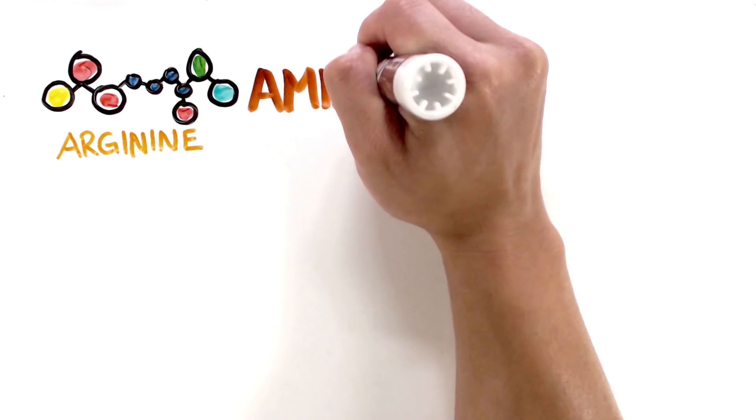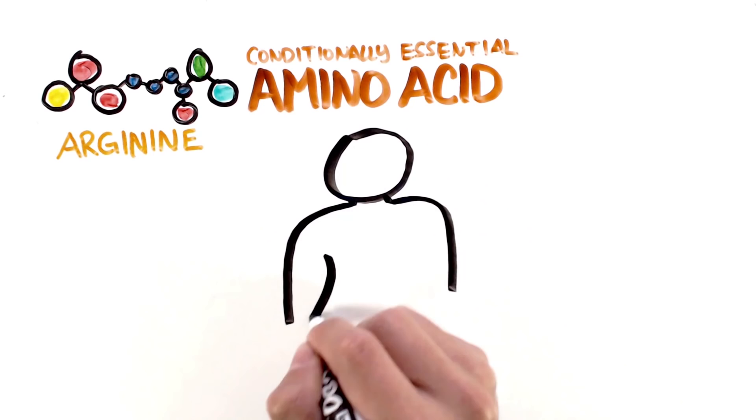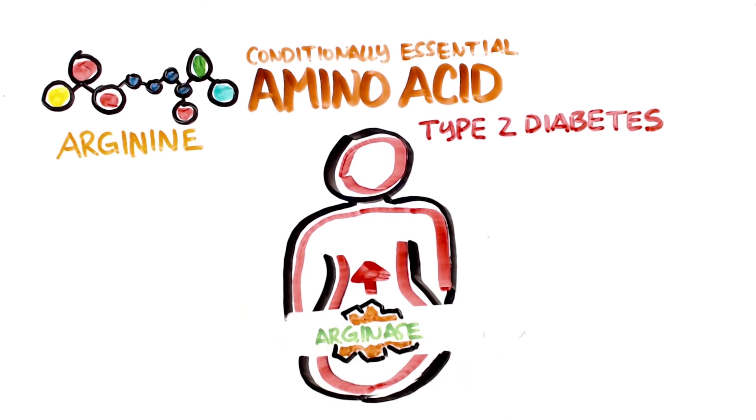A conditionally essential amino acid to be exact, since even though your body can make it on its own, deficiency can take place especially in type 2 diabetics from high activity levels from the enzyme arginase, which converts arginine into ornithine.